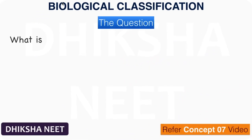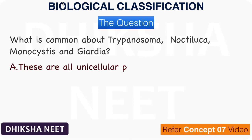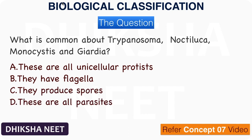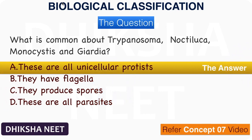The question: What is common about Trypanosoma, Noctiluca, Monocystis, and Giardia? A. These are all unicellular protists. B. They have flagella. C. They produce spores. D. These are all parasites. The answer is option A. These are all unicellular protists.